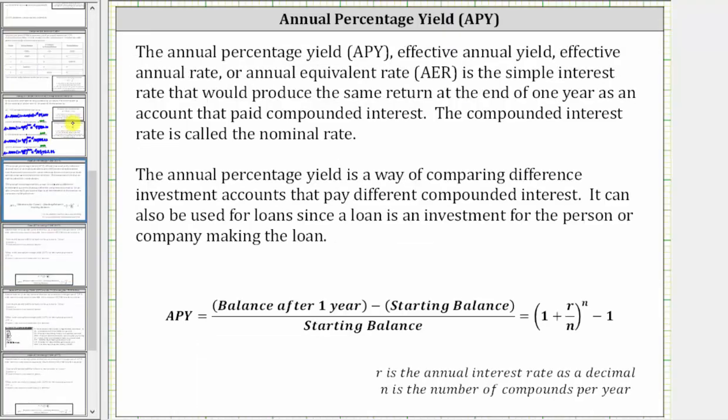For a quick review, the annual percentage yield, or APY, is also referred to as the effective annual yield, effective annual rate, or annual equivalent rate.